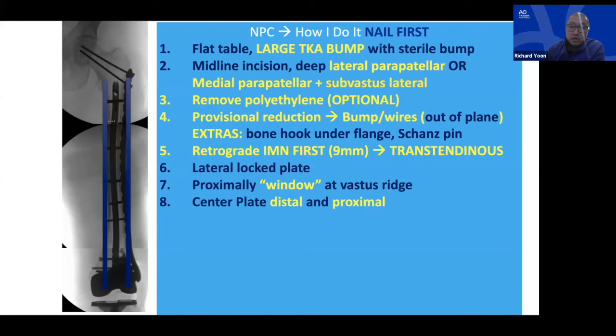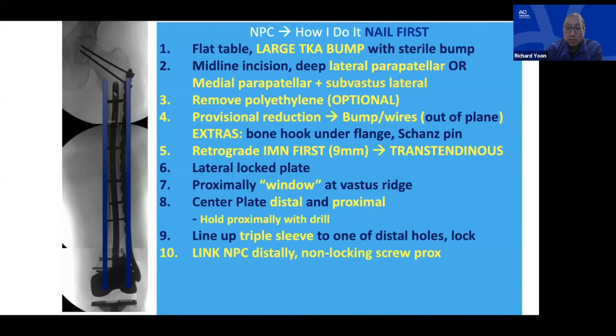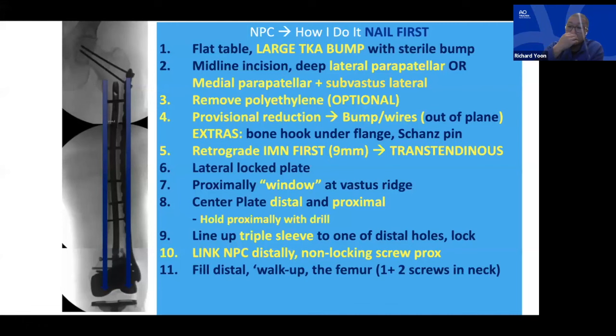I want to make sure the plate is centered both distally and proximally, checking orthogonal views. I put a drill bit distally, hold proximally with a non-locking drill bit going off the neck, then align the triple sleeve through the nailing jig, do one of the distal holes, lock using one of the plate locks, fill the distal block, then go up the shaft with non-lockers and lockers — typically getting one or two screws up in the neck.